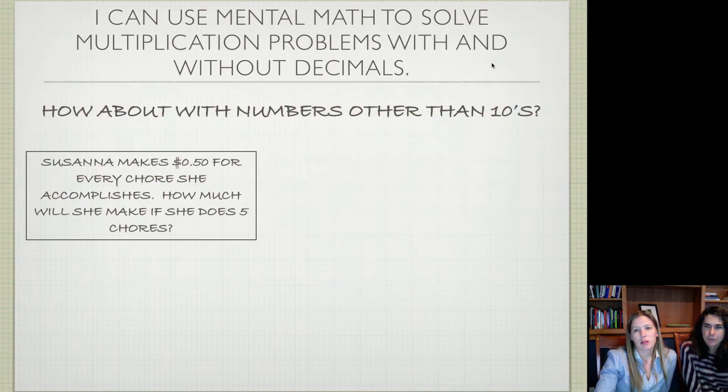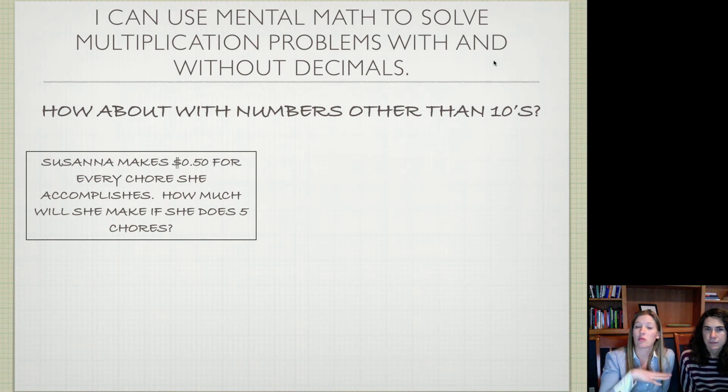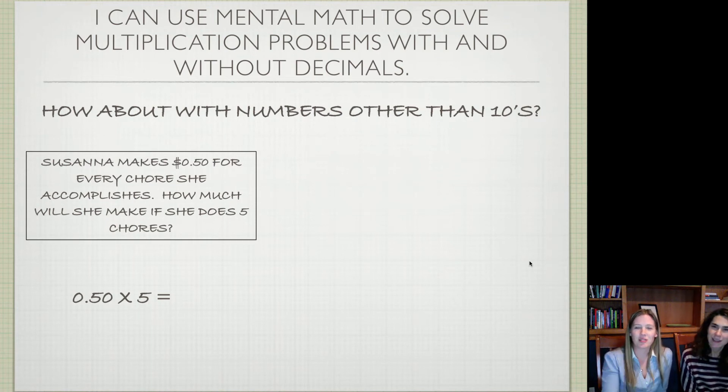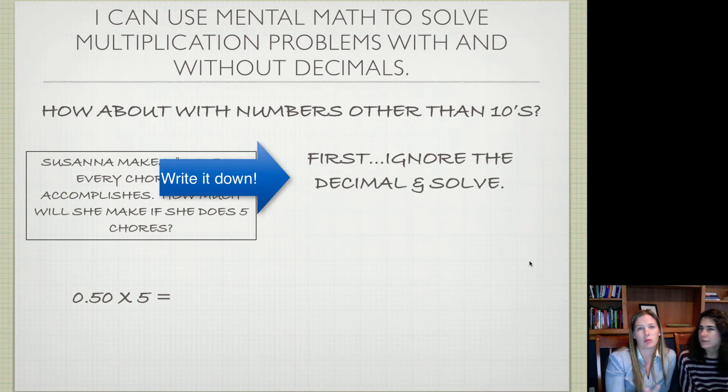The next part is, what happens if you're multiplying with something that's not so nice and neat as a ten? In this example, Susanna makes 50 cents for every chore she accomplishes, and she does five chores. How much would she make? You know enough about story problems to know you have to multiply the two. If we multiply 50 cents times five, how do we do that? Luckily for you, there are steps to do it. Write these down so you can have them to refer back to. The first thing that I usually do is I just ignore the decimal.